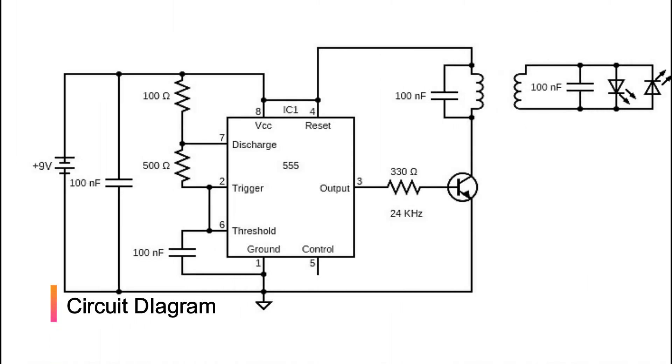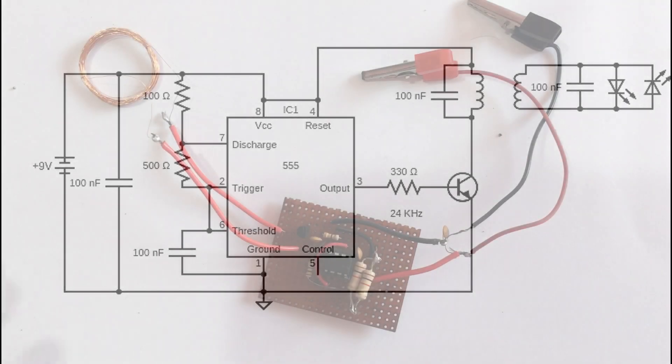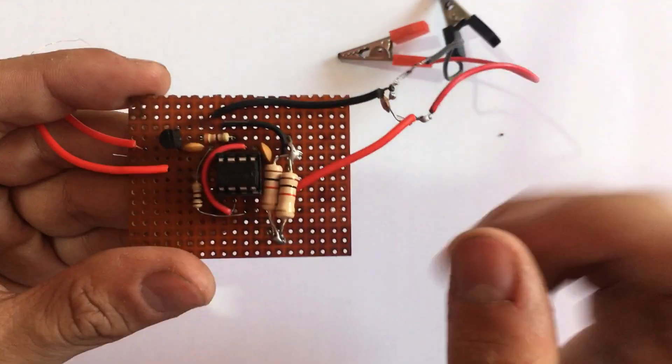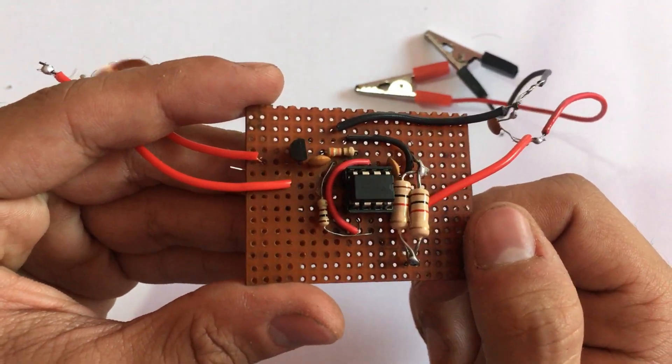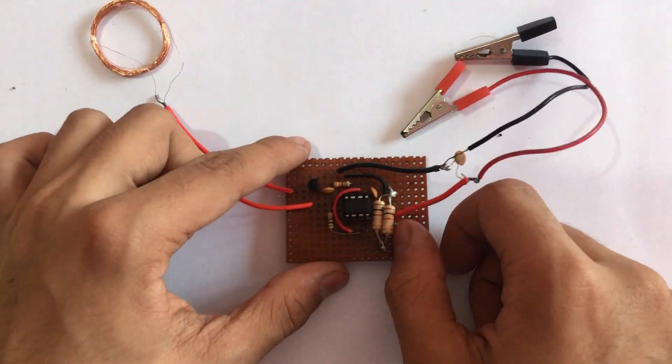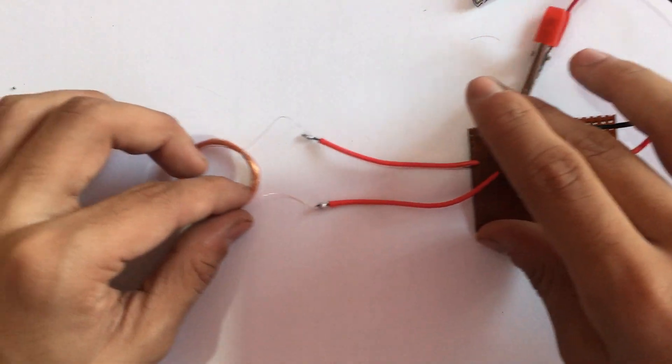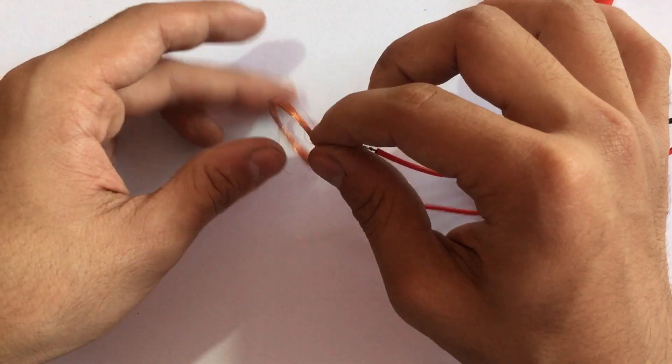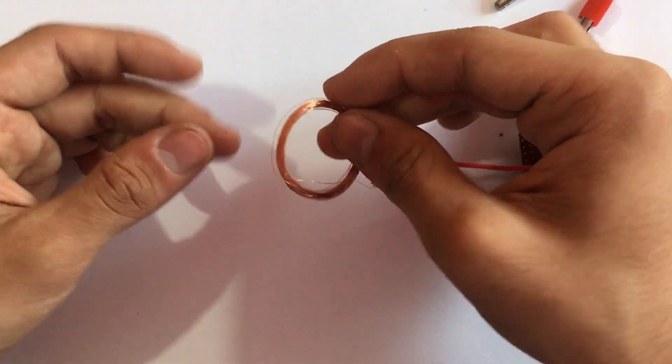So this is the final schematics of my circuit. Let's build it and see if it works. Here I have built a circuit. Here I have made a transmitter and a receiver coil which have 100 equal turns.